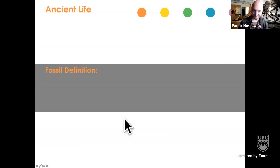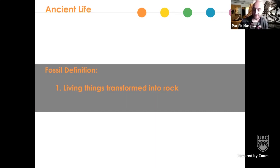There are two main types of fossils: body fossils, which are living things transformed into rock, and trace fossils, which are evidence of life transformed into rock.